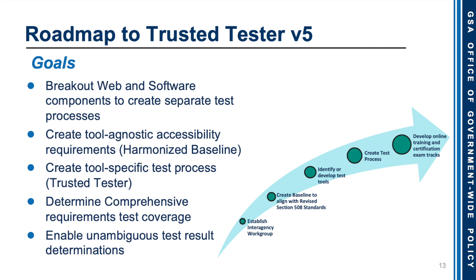The roadmap to Trusted Tester version 5. Some of the goals were to break out web and software components to create separate test processes, to create tool-agnostic accessibility requirements that harmonize with the baseline, to create tool-specific test processes such as Trusted Tester, determine comprehensive requirements for test coverage, and enable unambiguous test result determinations. The roadmap begins with the establishment of an interagency working group, then creating a baseline aligned with the revised Section 508 standards, identifying or developing testing tools, creating the test process, and finally developing online training and certification exam tracks.